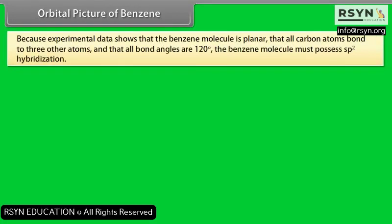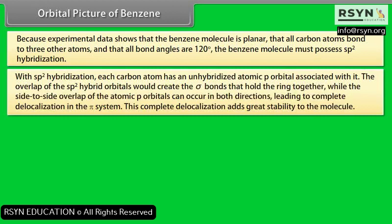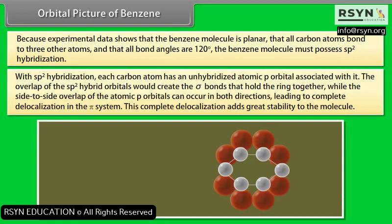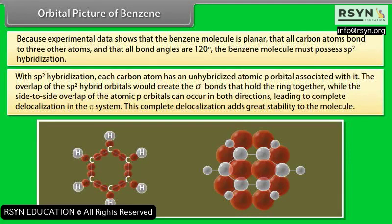Orbital picture of benzene. Because experimental data shows that the benzene molecule is planar, that all carbon atoms are bonded to three other atoms, and that all bond angles are 120 degrees, the benzene molecule must possess sp2 hybridization. With sp2 hybridization, each carbon atom has an unhybridized atomic p orbital associated with it. The overlap of the sp2 hybrid orbitals creates the sigma bonds that hold the ring together, while the side-to-side overlap of the atomic p orbitals in both directions leads to complete delocalization in the pi system, adding great stability to the molecule.